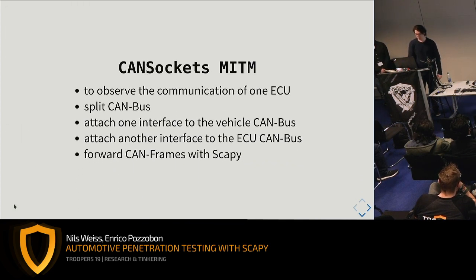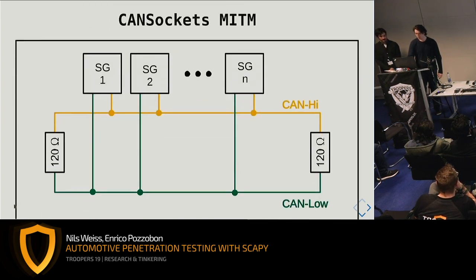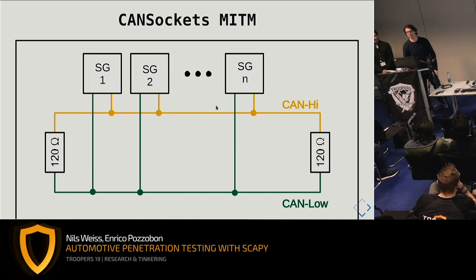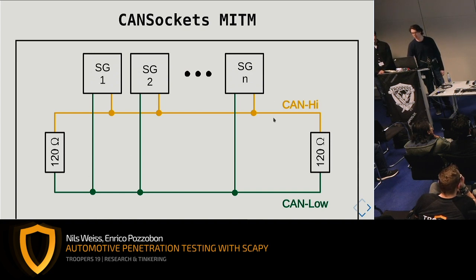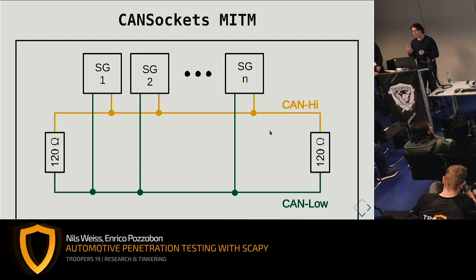For man-in-the-middle attacks on CAN bus: using Scapy's bridge-and-sniff function. Physically on a car, you have to separate the CAN bus — break it at a point, attach two network interfaces from your pentester PC to the two buses, creating CAN bus 1 and CAN bus 2. You can then investigate what frames one specific ECU is sending and what frames are important for it.